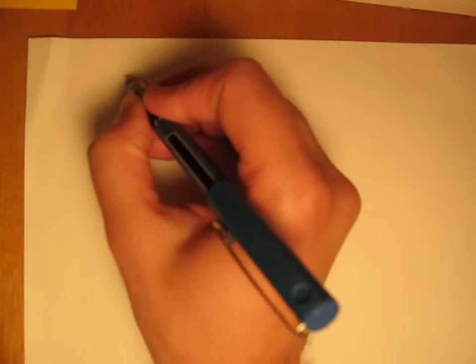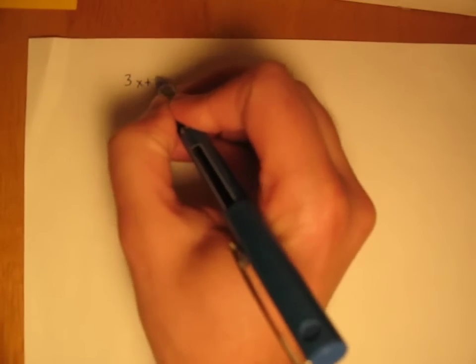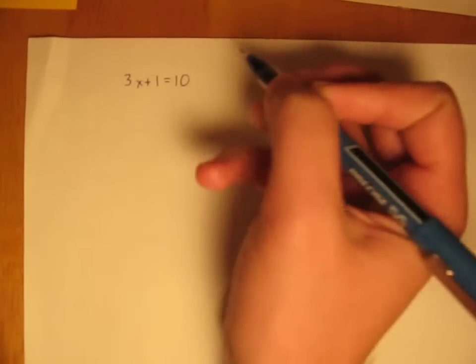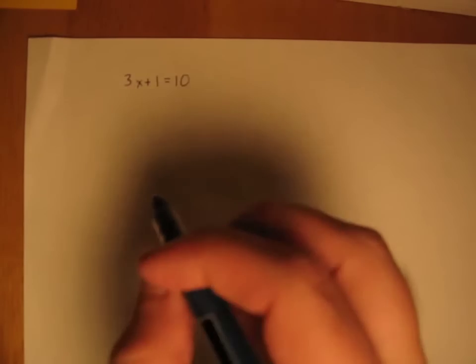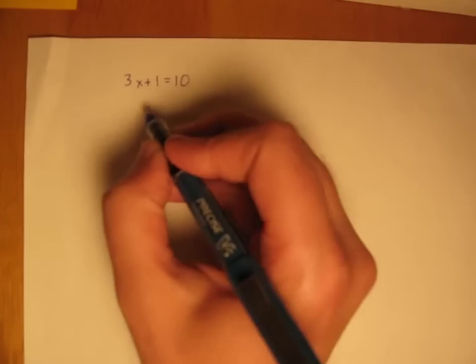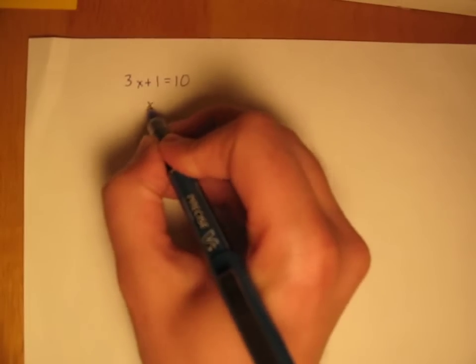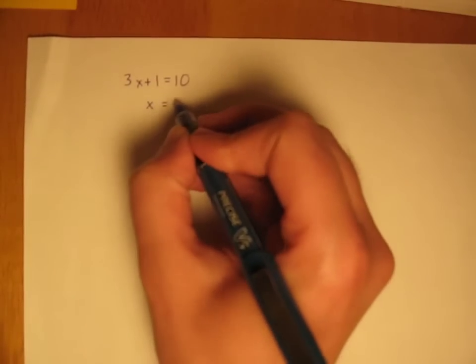So in algebra all the time we're isolating variables. If we have something like 3x plus 1 equals 10, solving an equation is an example of isolating a variable because we want to get x by itself, to isolate it. We do that by doing this untangling process so that we end up getting x equals 3.